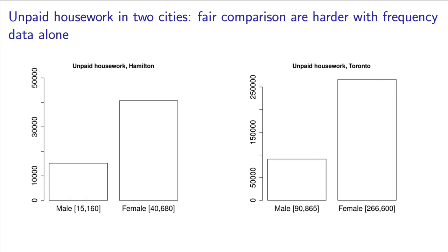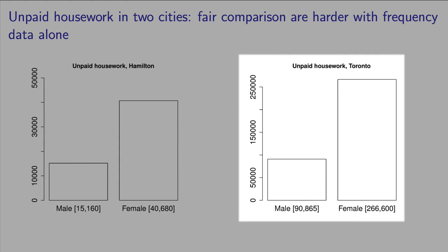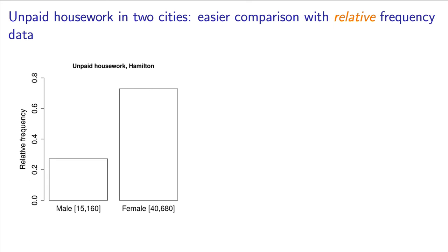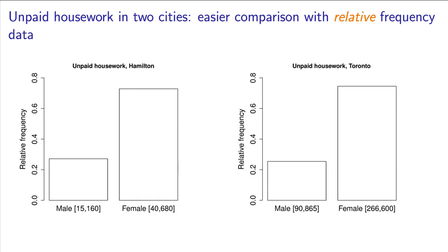For example, if we found data from Toronto, it is hard to compare Toronto to Hamilton because of the different number of subjects. When we show the plot with a relative frequency for Hamilton, we can compare it easily to Toronto side by side, and we see the proportions are almost the same. It is important to note that the area under a relative frequency plot will add up to 1, or 100%.